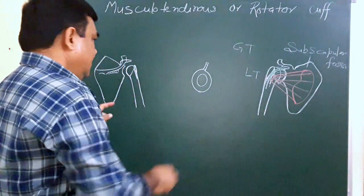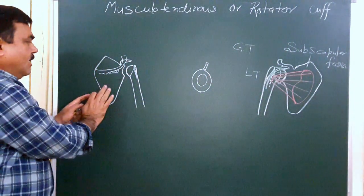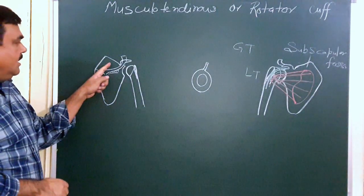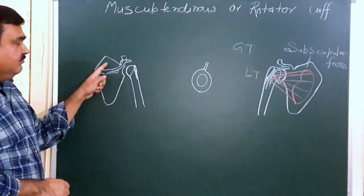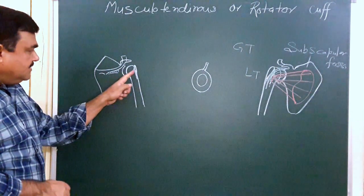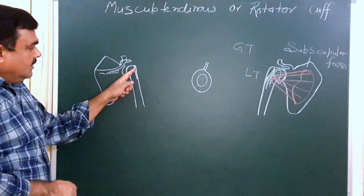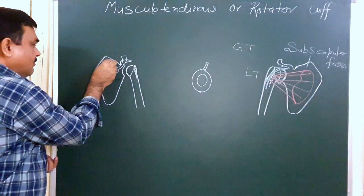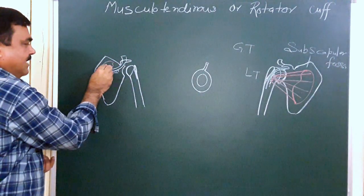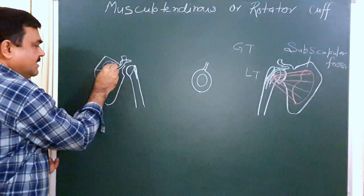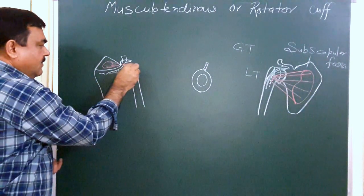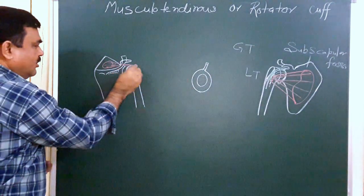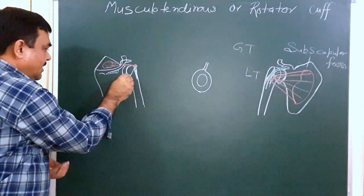On the posterior aspect of the scapula you will find the spine of the scapula, the supraspinous fossa, and the infraspinous fossa. This is the greater tubercle of the humerus. In the supraspinous fossa, one muscle takes origin — the supraspinatus. This supraspinatus muscle is inserted on the upper part of the greater tubercle.